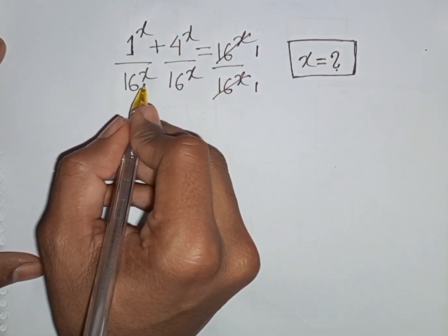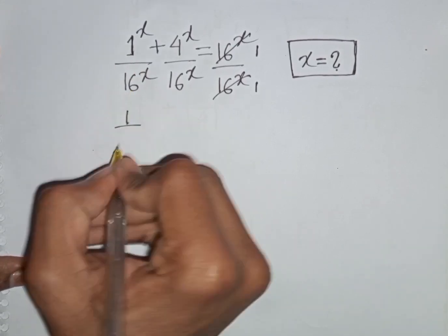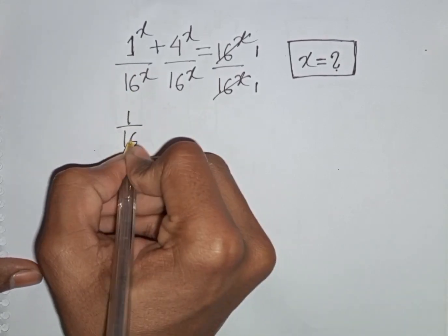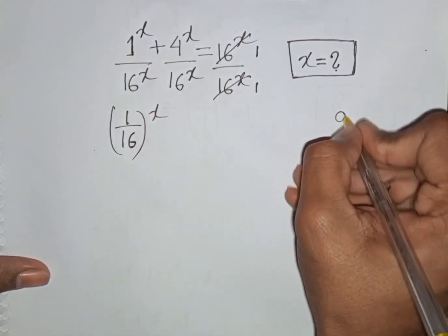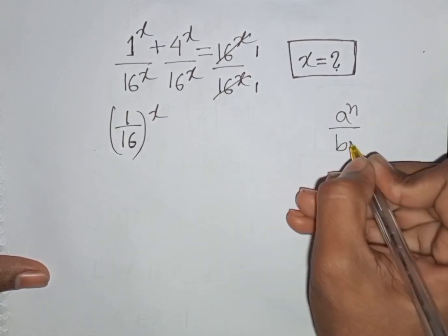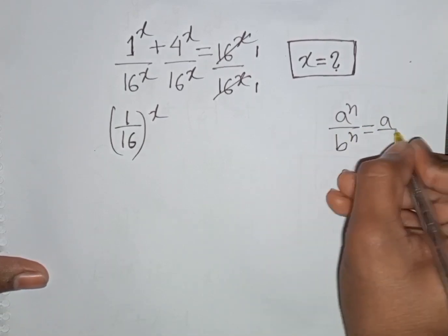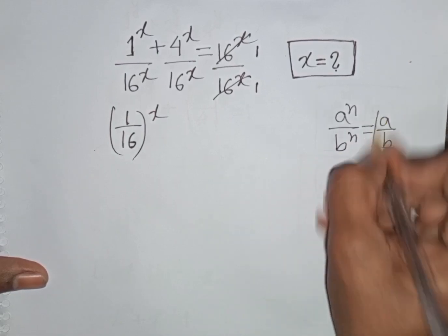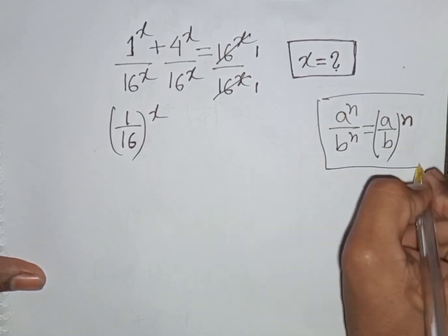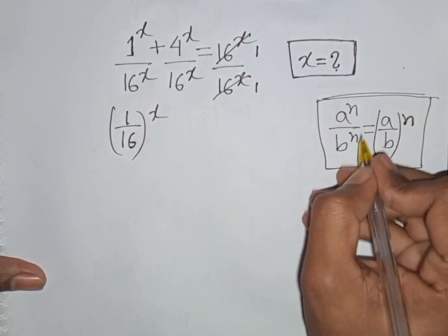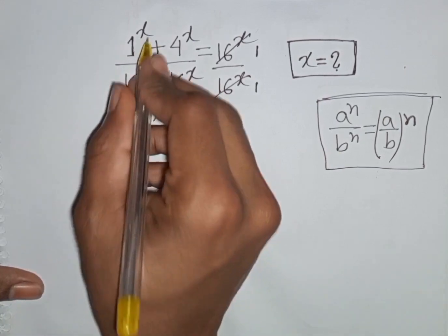On the left side, we have terms divided by 16^x. Using the exponential rule a^n · b^n = (a·b)^n — same power but different base — we can combine them into a bracket raised to the common power x.